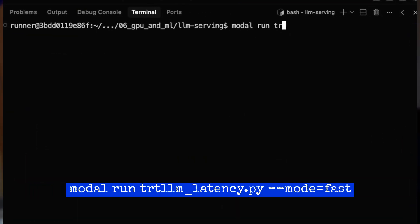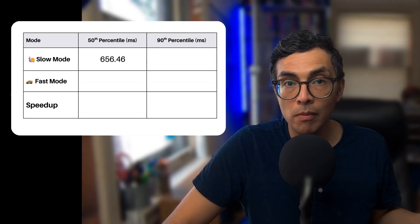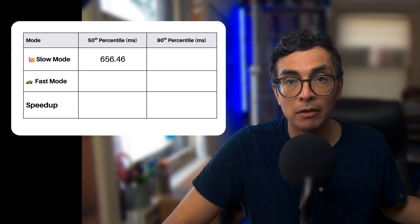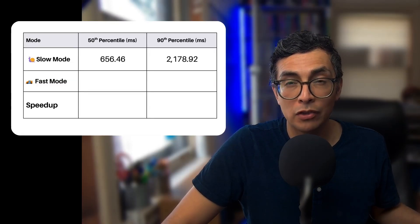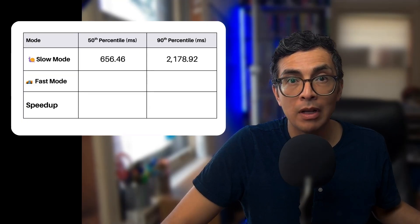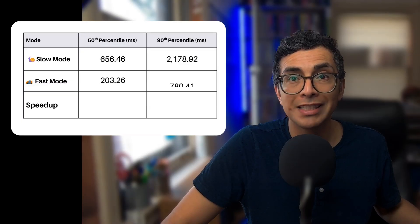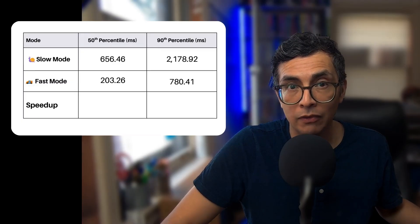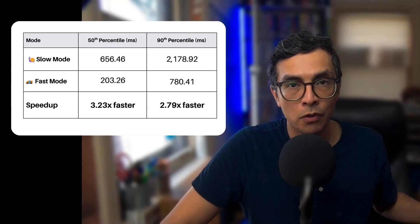Now let's try fast mode — this applies all of our optimizations. Same prompts, but now powered by an optimized TensorRT LLM engine. Here's how they compare: in slow mode, the 50th percentile comes in at about 660 milliseconds and the 90th percentile jumps to about 2,180 milliseconds. In fast mode, the 50th percentile drops to 200 milliseconds and the 90th percentile drops to 780 milliseconds. That's about a 3x speedup, which makes the experience feel much more fluid and responsive.